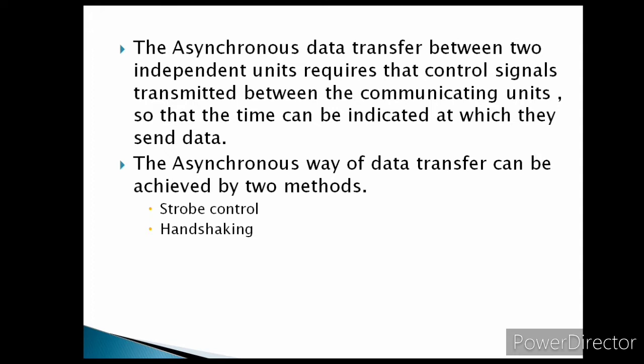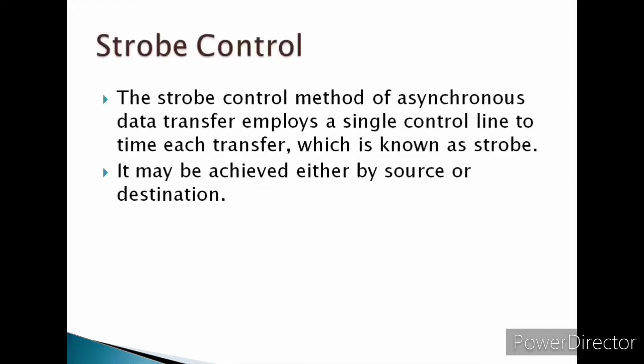The strobe control method of asynchronous data transfer employs a single control line to time each transfer. This control line is also known as a strobe, and it may be activated either by the source or destination, depending on which unit initiates the transfer.